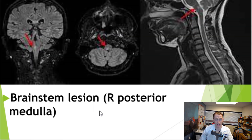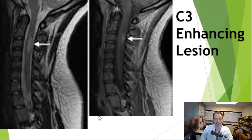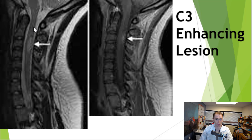Here we can see a brainstem lesion — a lesion in the posterior fossa, the brainstem and cerebellum — in the right posterior medulla, typical of MS, though you can also see this in neuromyelitis optica, especially right next to the fourth ventricle. So it would be hard to say just looking at this image that this is definitely MS. And finally in the spine, looking at sagittal slices through the cervical spine — these are the vertebrae, the discs, and the spinal cord, which should be dark — you can see a white lesion at the C3 level that with gadolinium contrast does take up the dye and looks active. These are just some of the different spaces characterizing dissemination in space.